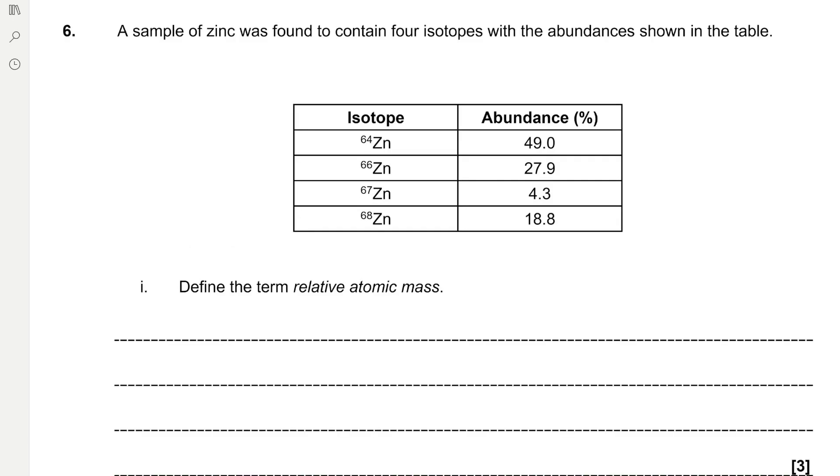Question 6: Define the term relative atomic mass. This is an important definition which comes up often. The definition of the relative atomic mass is the weighted mean mass of an atom of an element relative to one twelfth the mass of an atom of carbon-12.